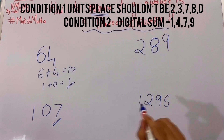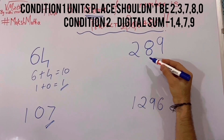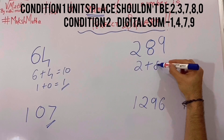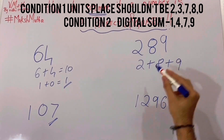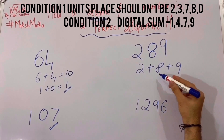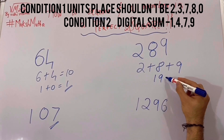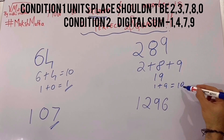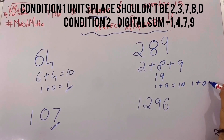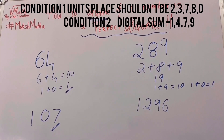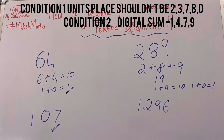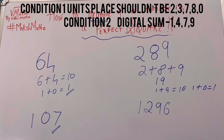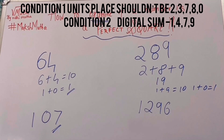Now 289. We will take the digital sum: 2 plus 8 plus 9. 2 plus 8 is 10, 10 plus 9 is 19, again 1 plus 9 is equal to 10, and then 1 plus 0 is equal to 1. You can see that the digital sum is 1. It means it is a perfect square number, and we know that 289 is the square of 17.